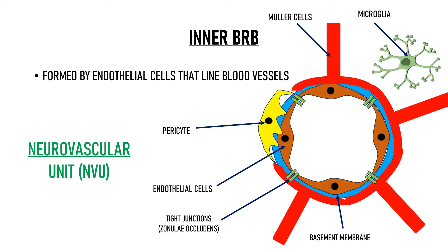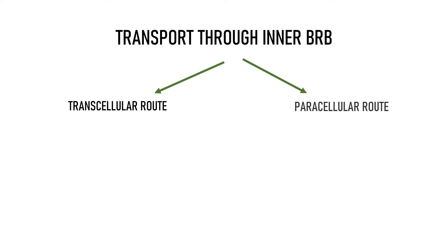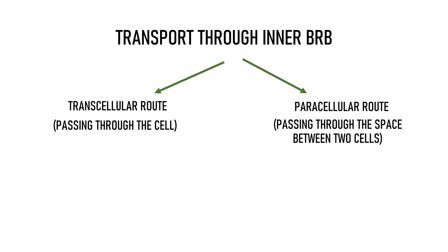The inner blood retinal barrier controls the transport of molecules, ions, water, and cells to and from the retina via the systemic circulation through transcellular and paracellular pathways. Transcellular means transport occurs by passing through the cells; paracellular means transport takes place through the space between two cells. Transport across the inner blood retinal barrier occurs mainly through a transcellular mechanism. Small lipophilic molecules can freely diffuse through the endothelial cells, while larger lipophilic molecules along with hydrophilic molecules and ions cross the barrier using ATP-dependent transport.